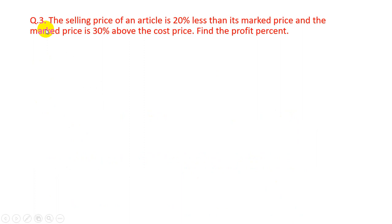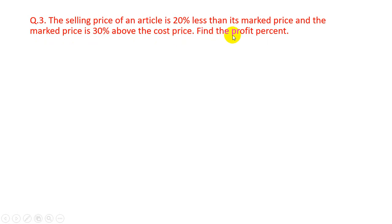Question number 3. The selling price of an article is 20% less than its marked price, and the marked price is 30% above the cost price. Find the profit percent.